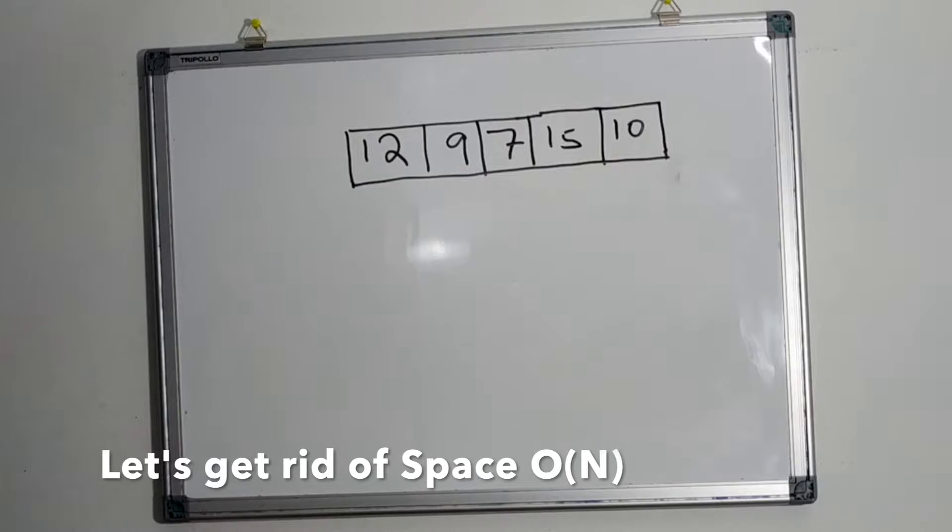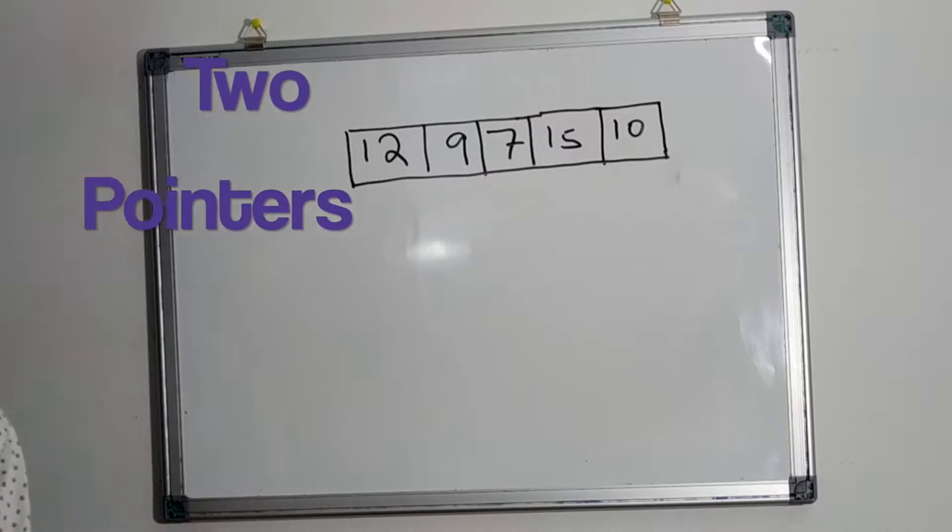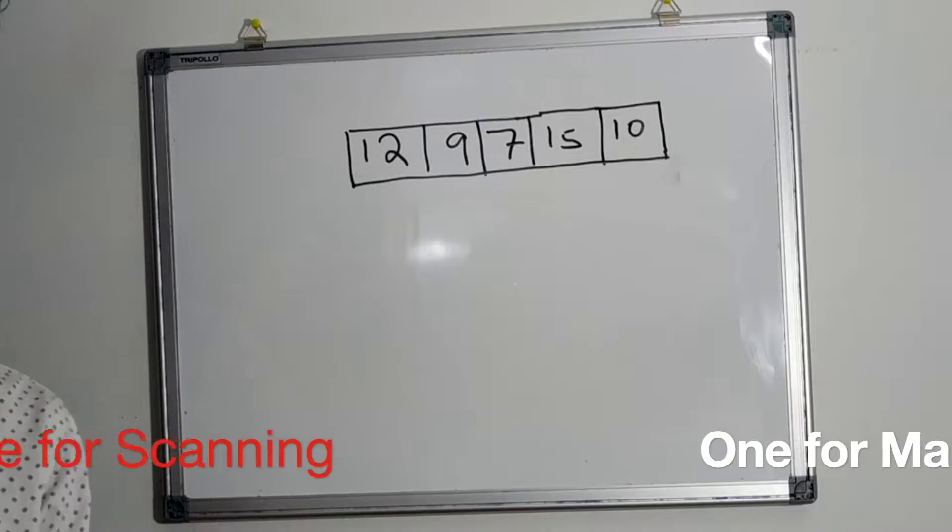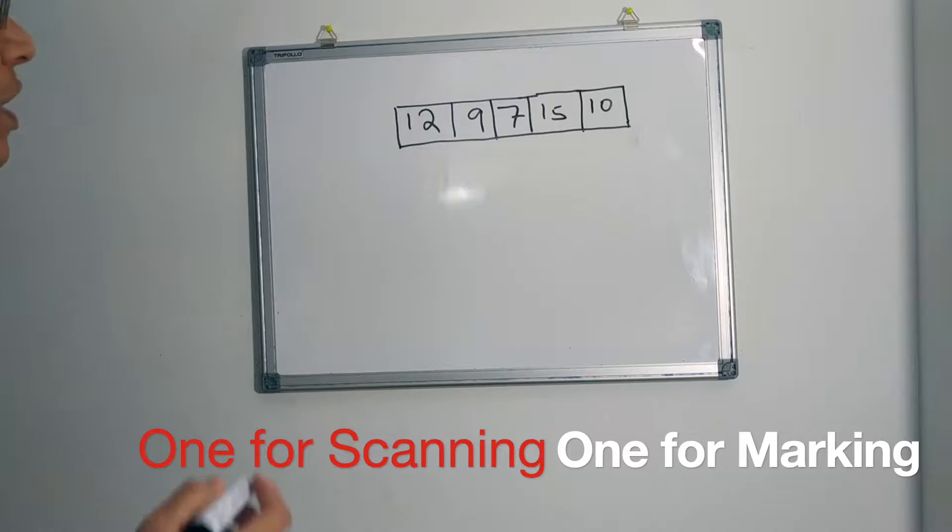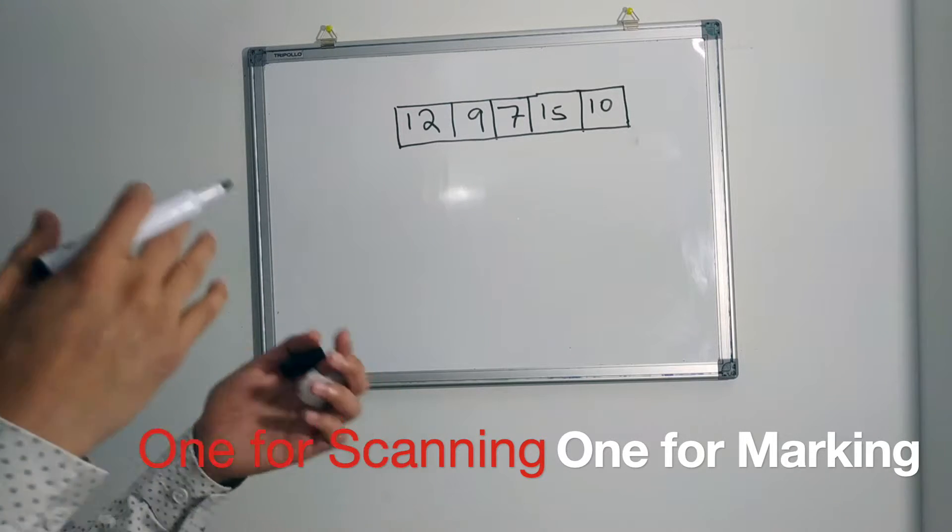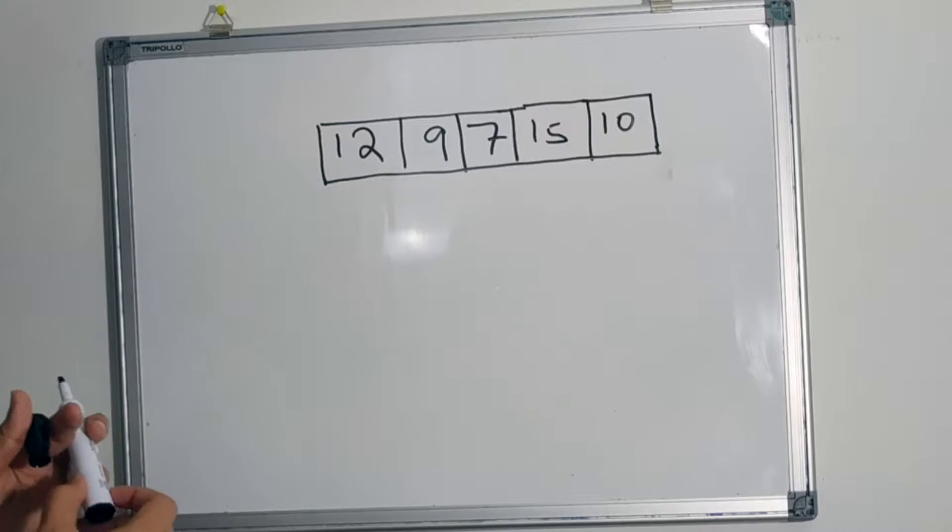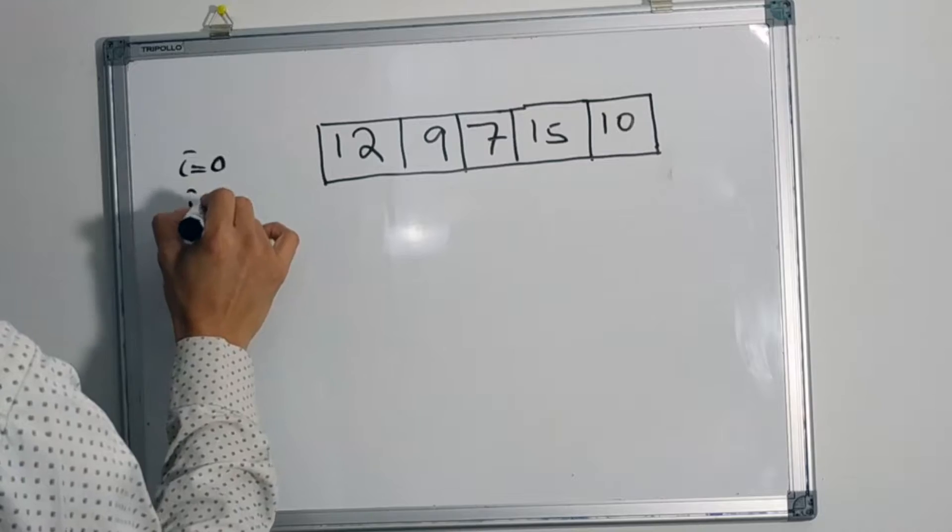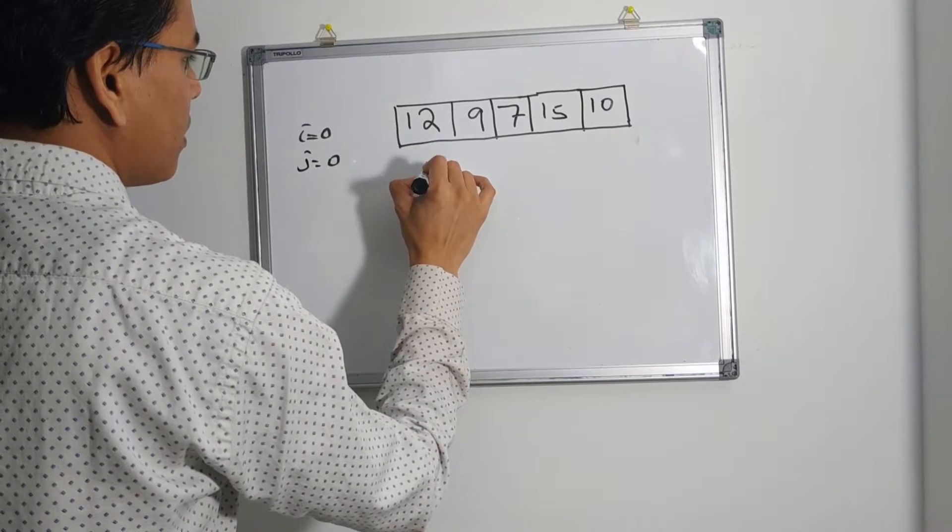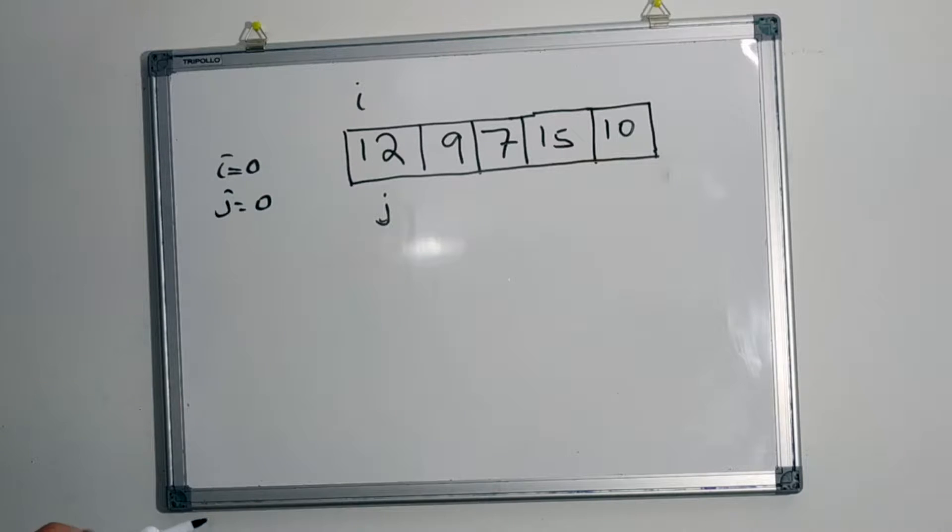In the in-place algorithm we will use two pointers. One is for scanning all the elements and another is for marking the elements. Let's say the two pointers are i and j. Let's initialize them with start of the array, which is 0. So i equals 0 and j equals 0. J is our scanner and i is our marker.